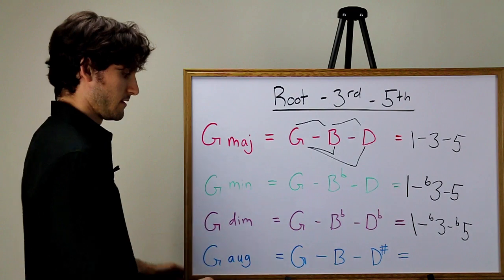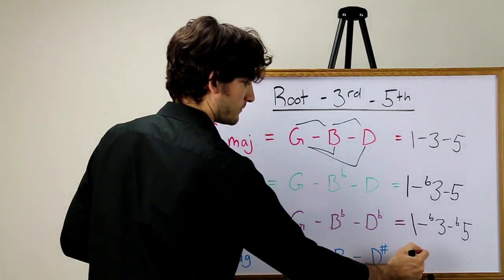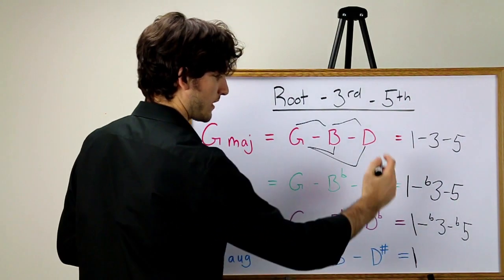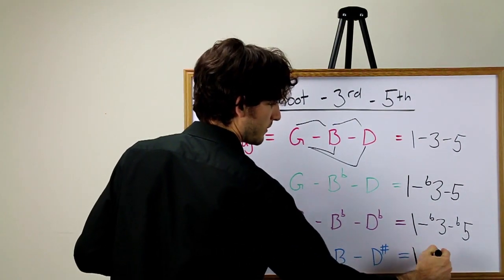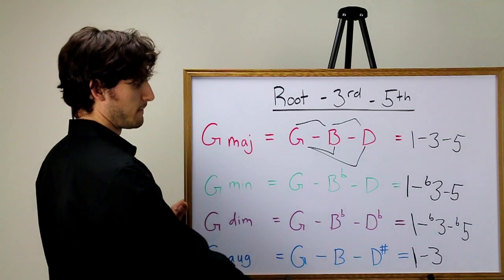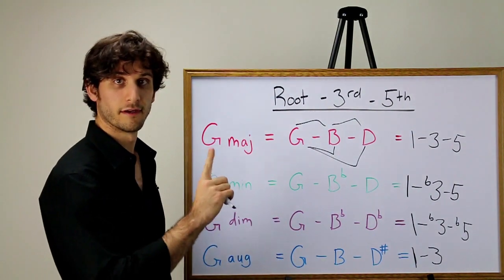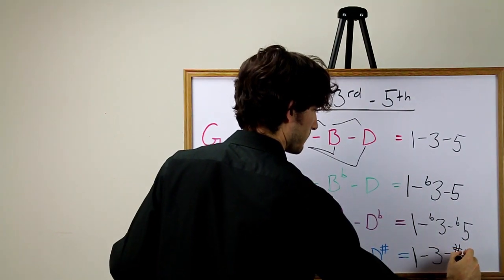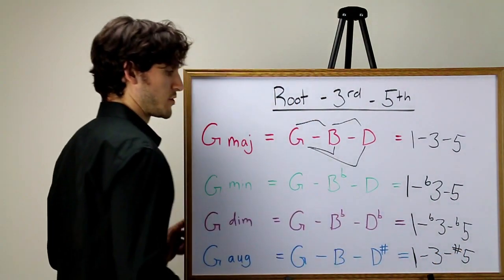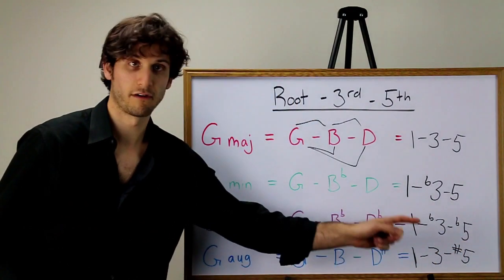So we write it like this: one, the same one as we've had in all the other triads because it's the root; three, not a flat three because we went back to that major third again; and now, a sharp five. One, three, sharp five, the basic construction of an augmented chord.